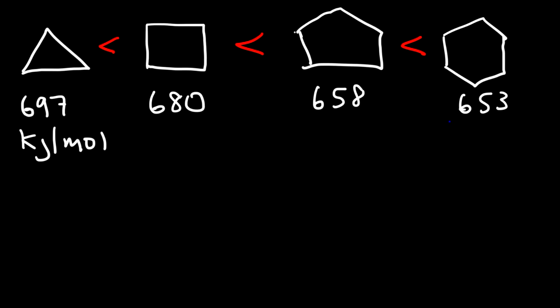So as you can see, cyclohexane has the least amount of ring strain because it has the lowest heat of combustion per CH2 group. So therefore, cyclohexane is the most stable in this group, where cyclopropane is the least stable.